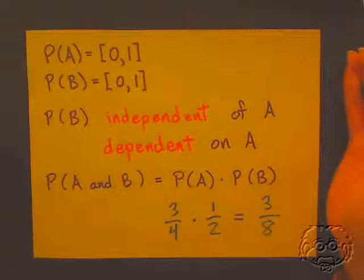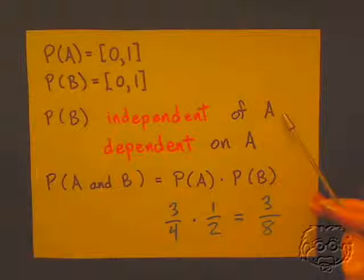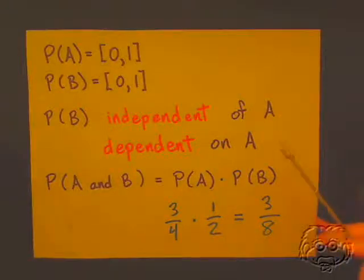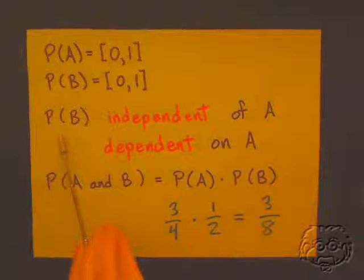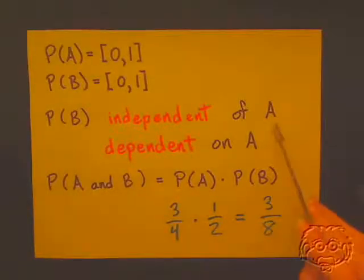Case one: the probability of event B occurring is independent of event A. That means you can calculate the probability of event B occurring independently of calculating the probability of event A occurring.